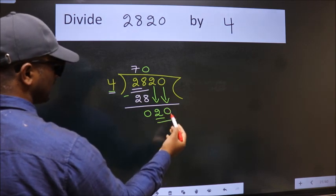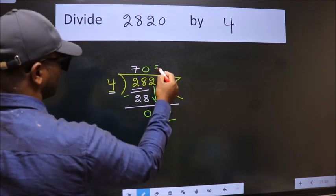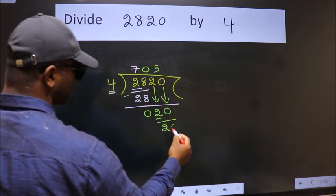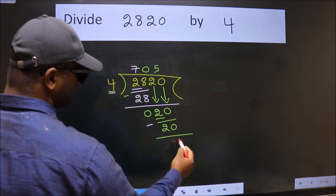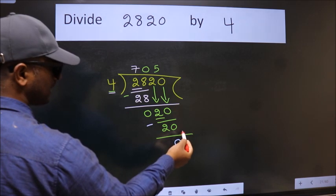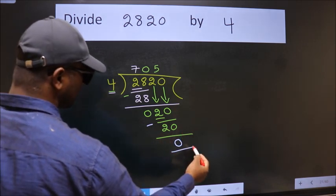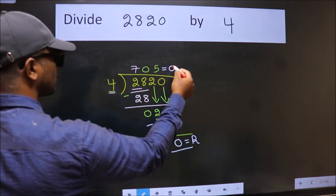So, 20. When do we get 20 in the 4 table? 4 times 5 is 20. Now we subtract. We get 0. No more numbers to bring down, so we stop here. This is our remainder and this is our quotient.